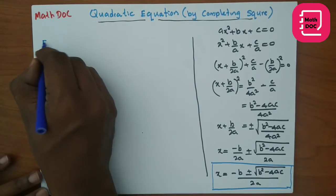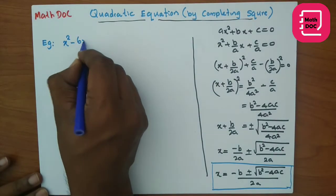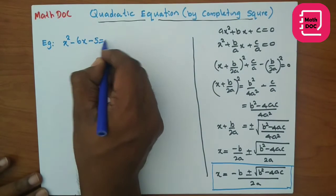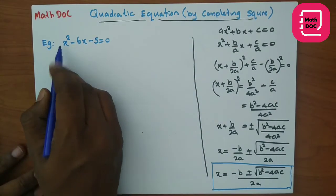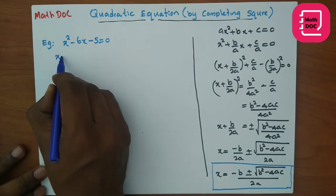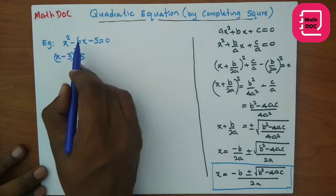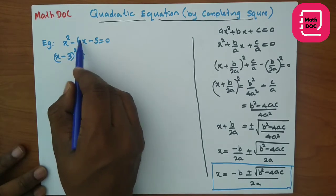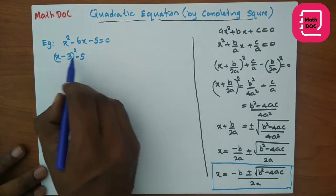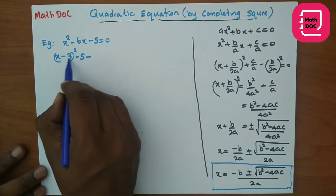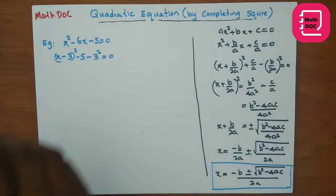As an example, consider x² - 6x - 5 = 0. Using the complete square method: here the x² coefficient is 1. The x coefficient is -6; divide that by 2 to get 3. Write (x - 3)², then subtract the constant square, which is 9, and keep the constant -5.